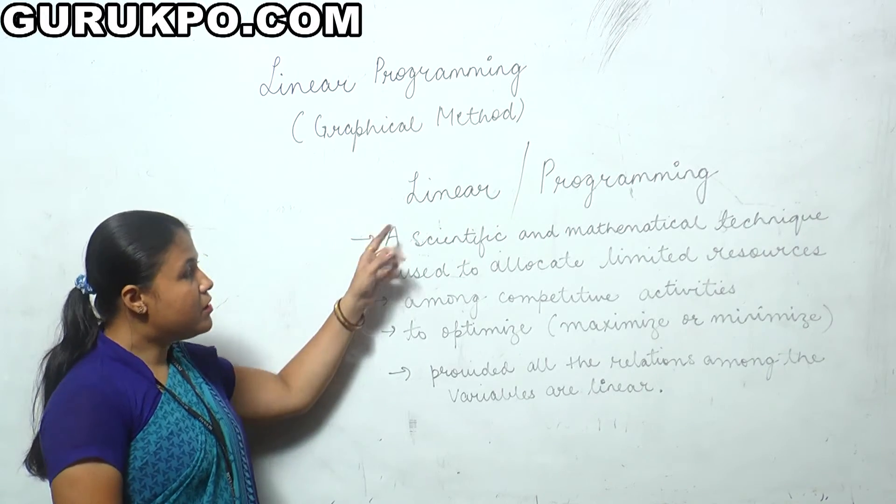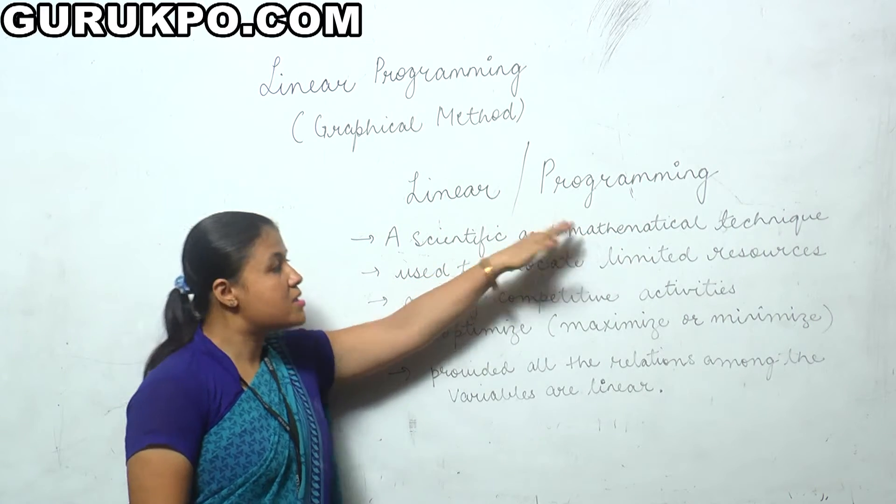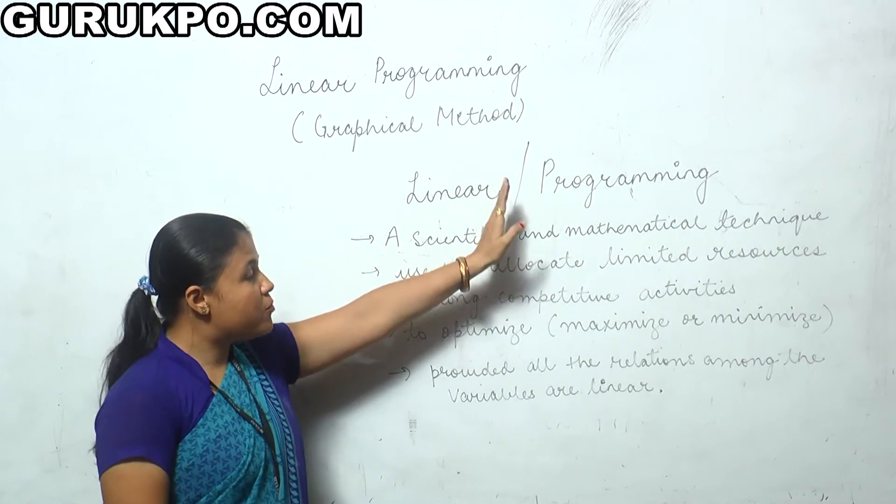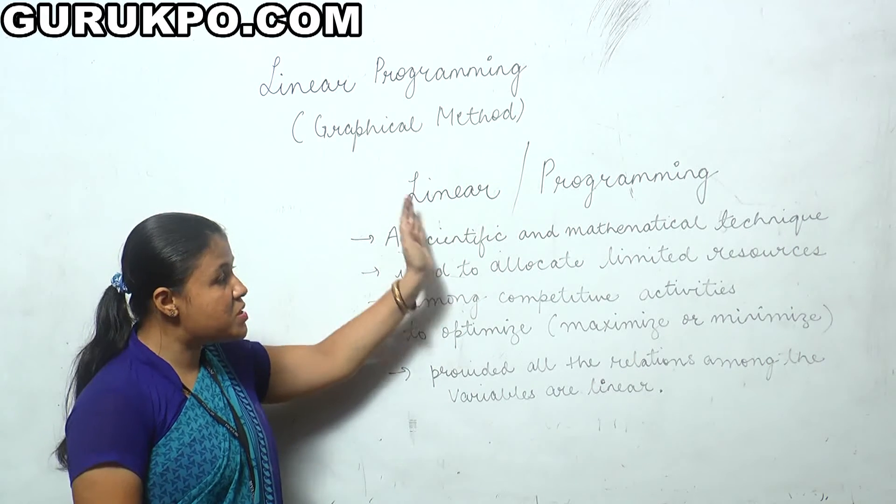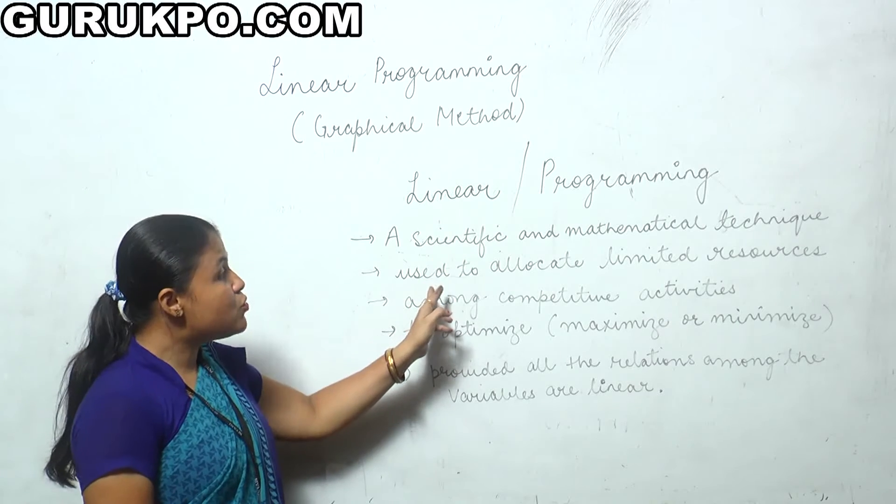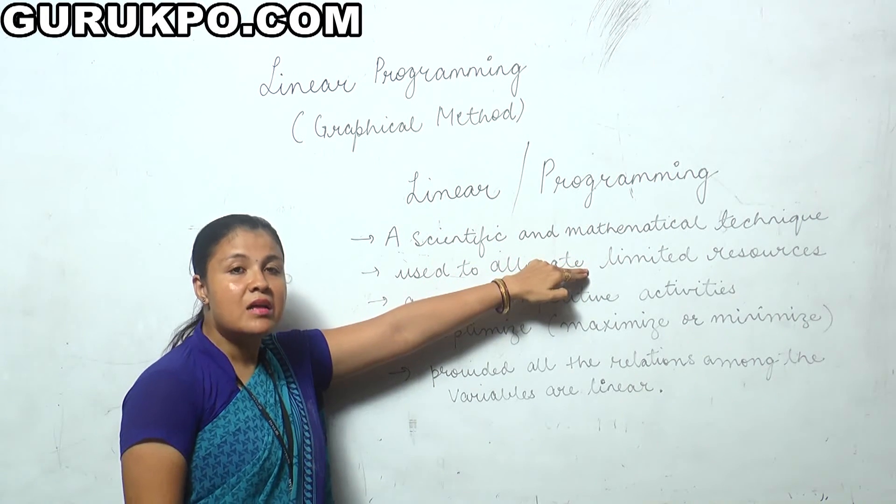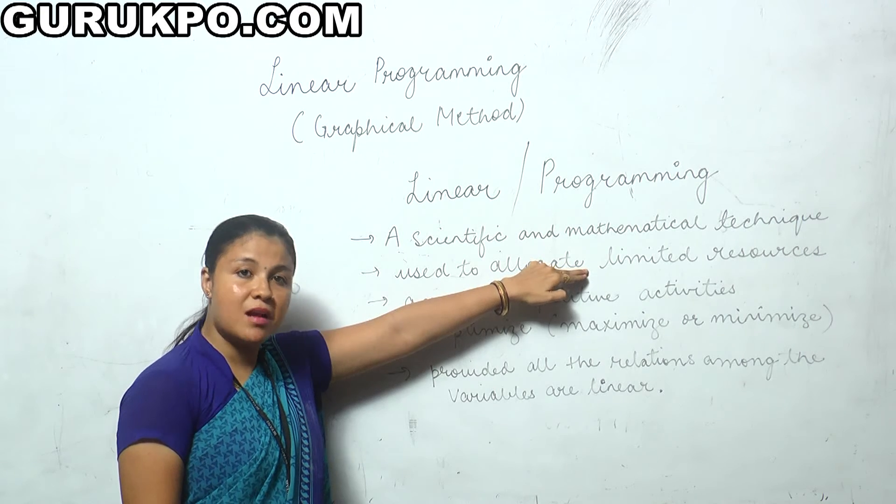In general, Linear Programming is a scientific and mathematical technique used to allocate limited resources. The variables or problem selected is drafted in mathematical terms. Since resources are limited, the problem of allocation arises.